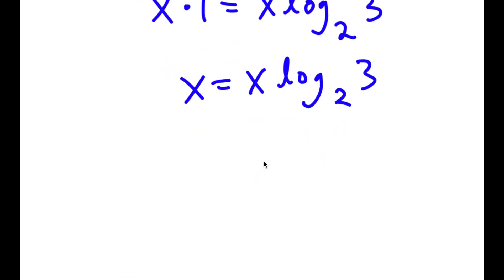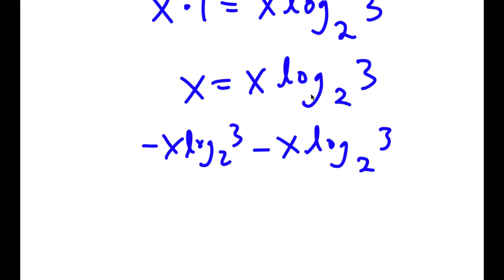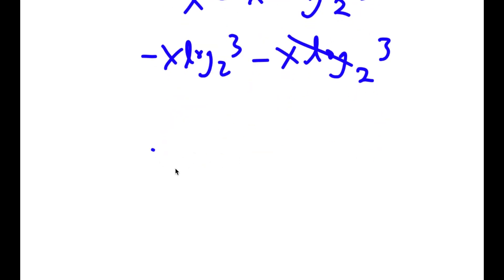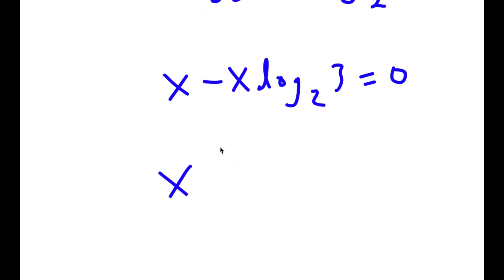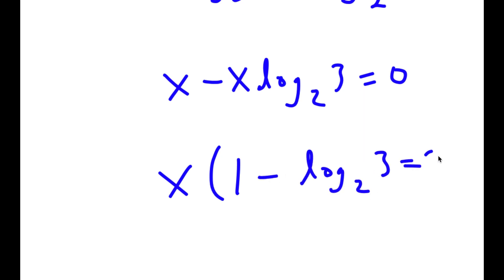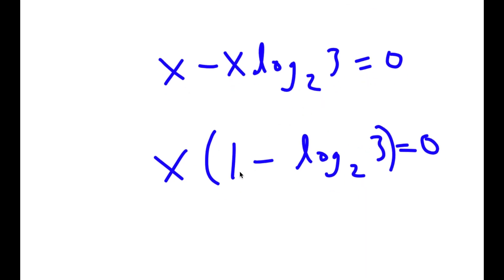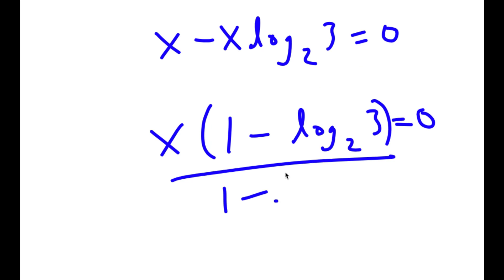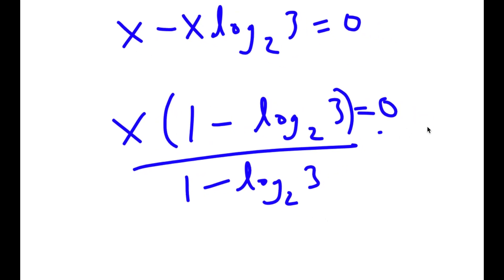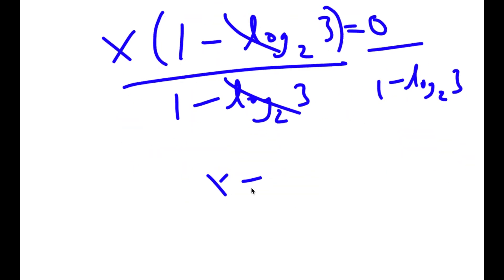Now I'm going to subtract x times log base 2 of 3 from both sides. So I get x minus x times log base 2 of 3 is equal to 0. If I factor out x, I get x times (1 minus log base 2 of 3) is equal to 0. And if I divide both sides by (1 minus log base 2 of 3), these two cancel out and I'm left with x is equal to 0.